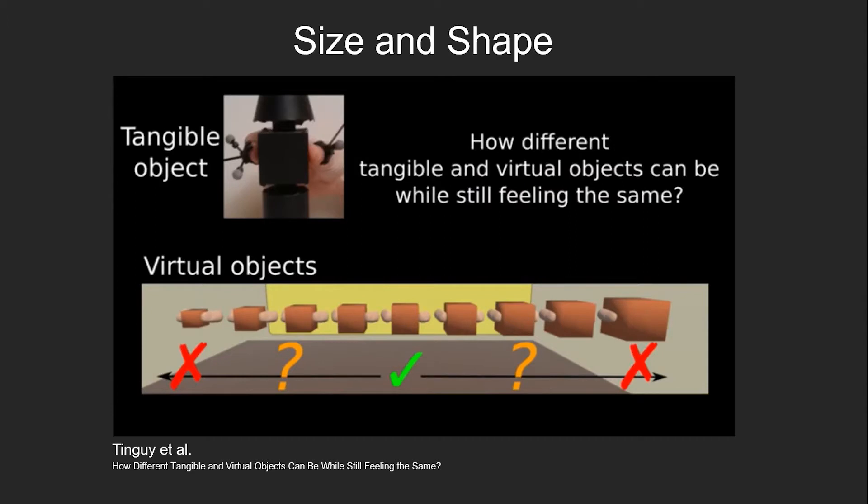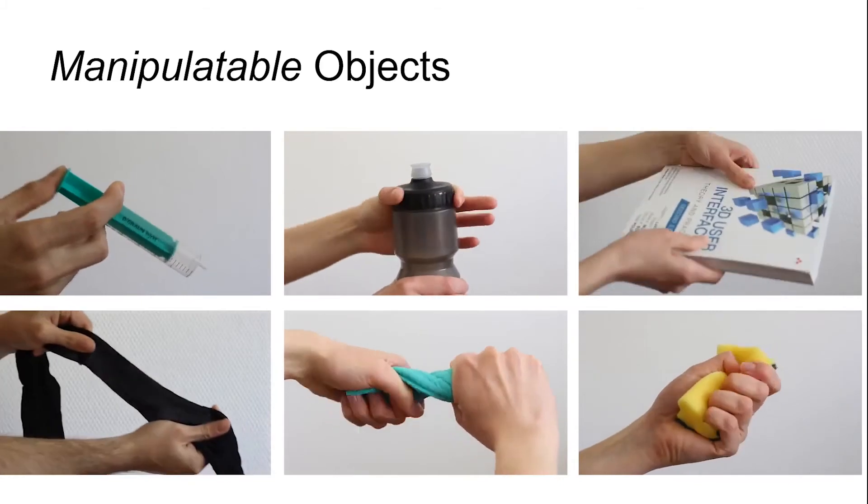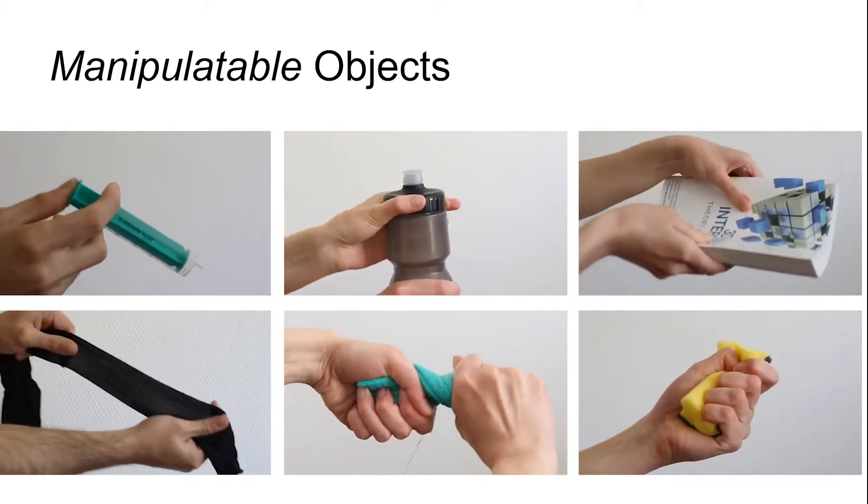In fact, we interact and manipulate them because usually they are not stiff. Instead, parts of objects can be translated, rotated, bent, stretched, twisted, even squeezed and so on.